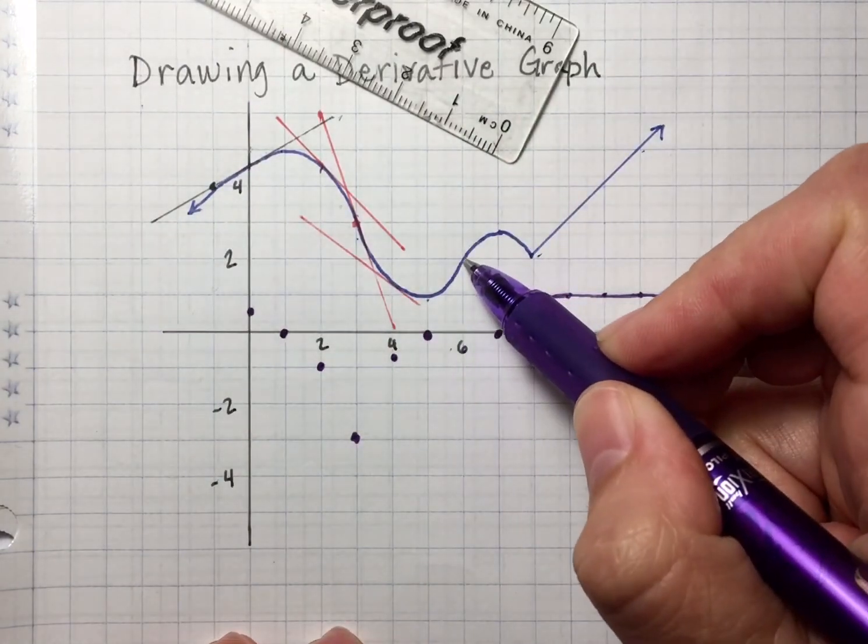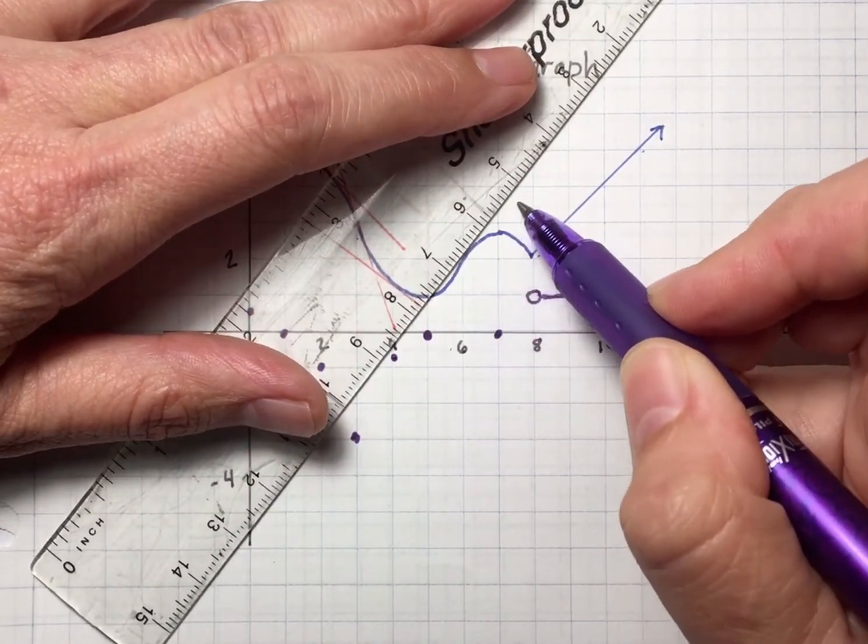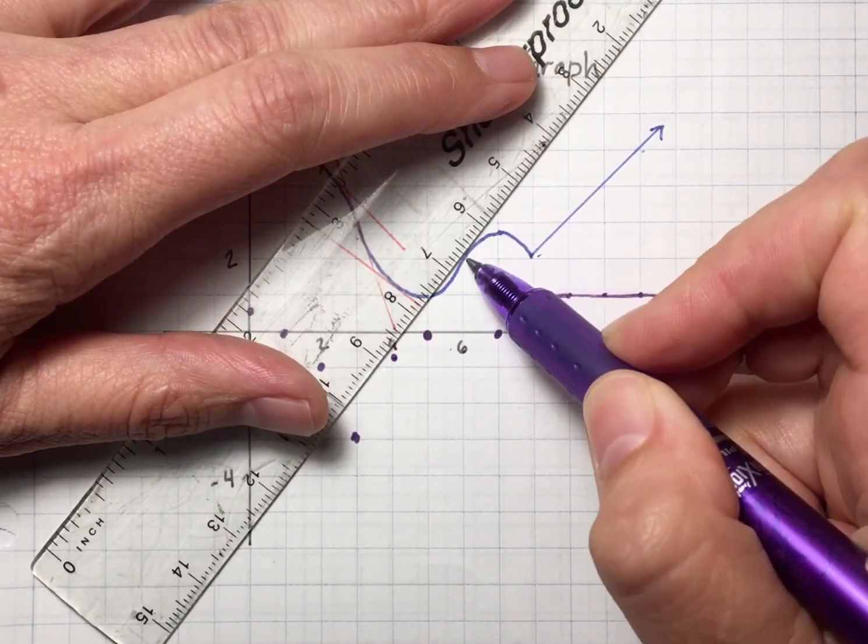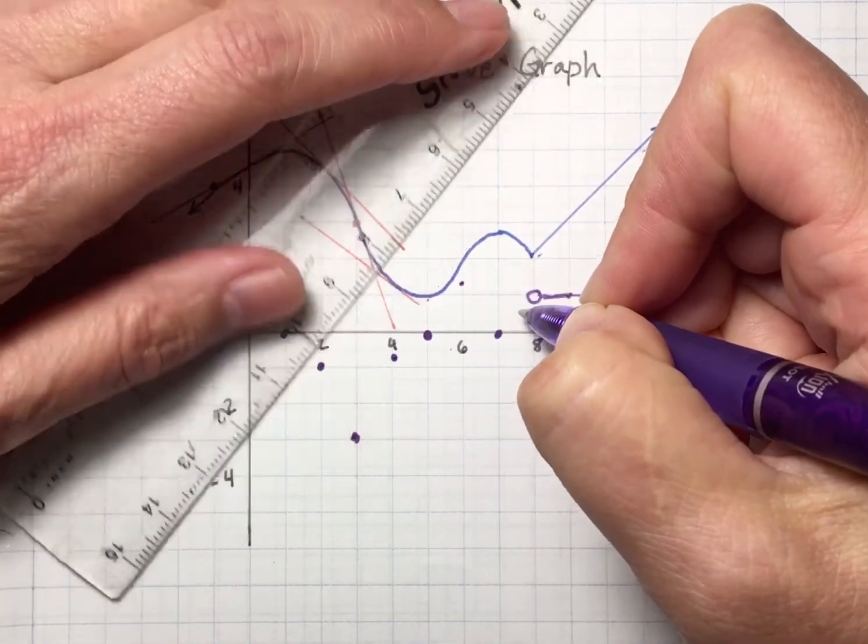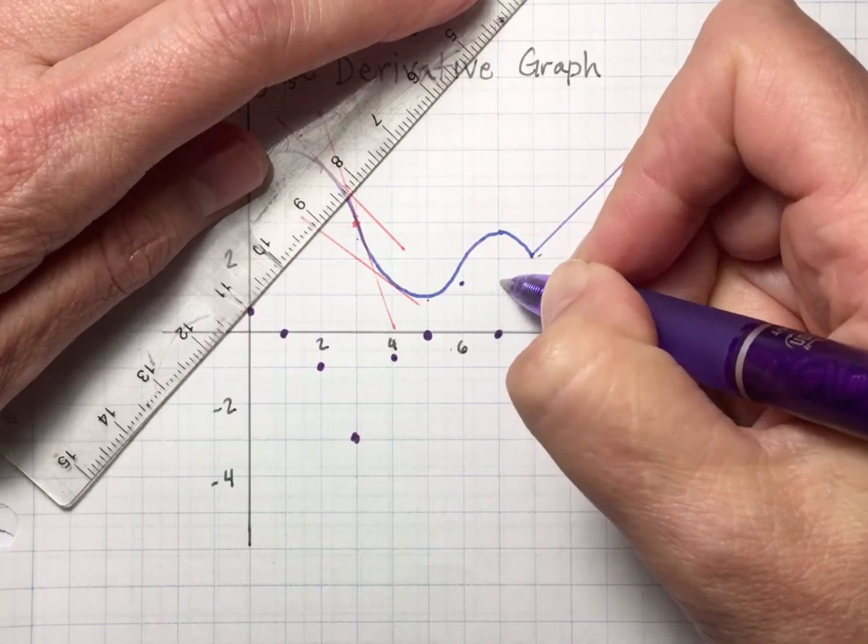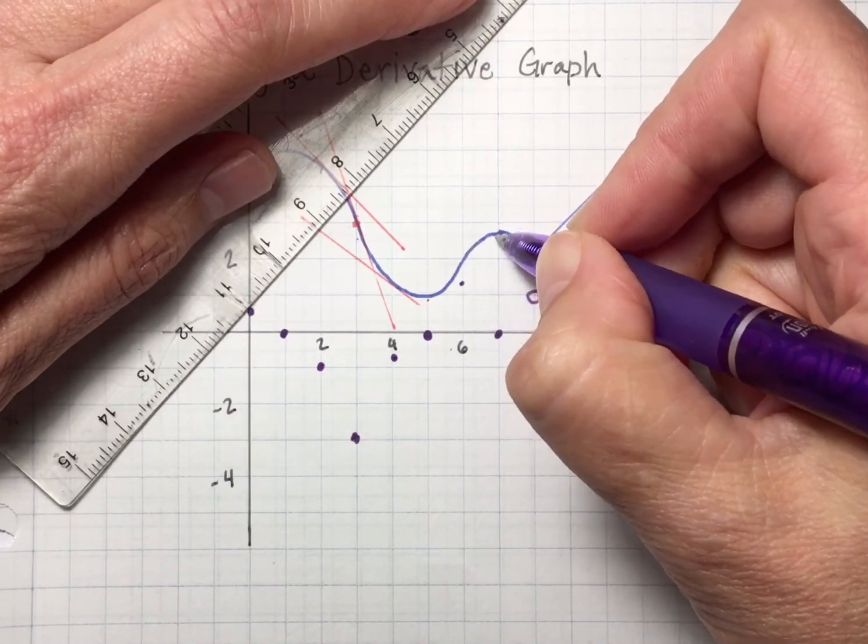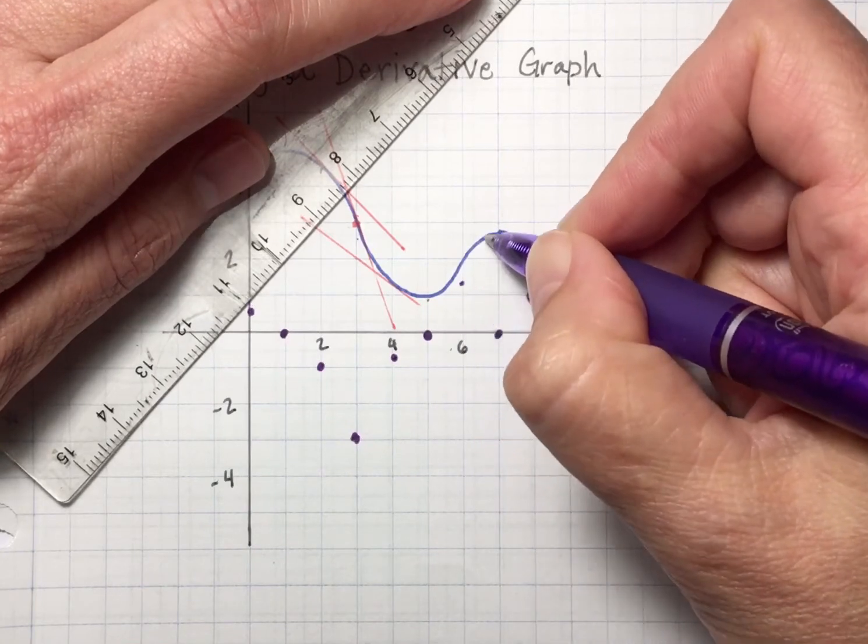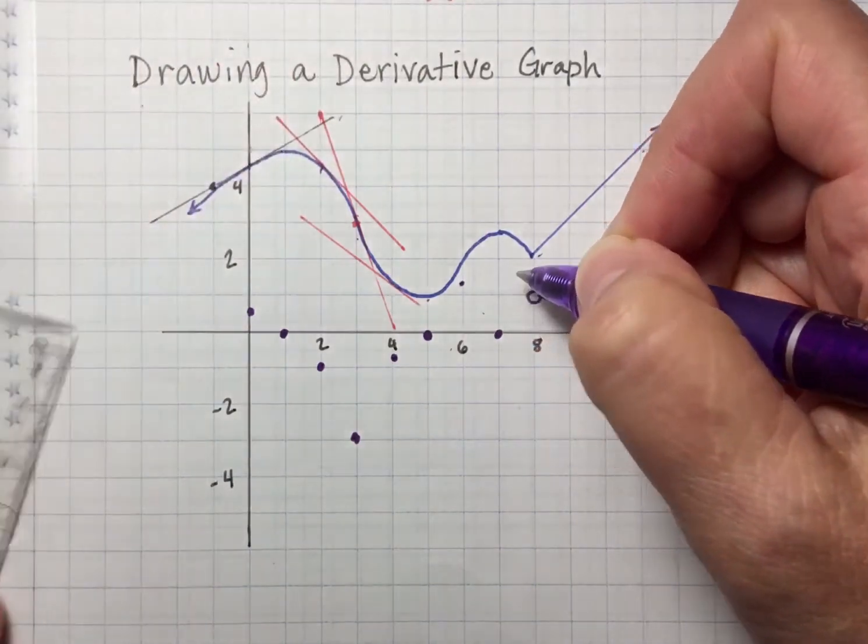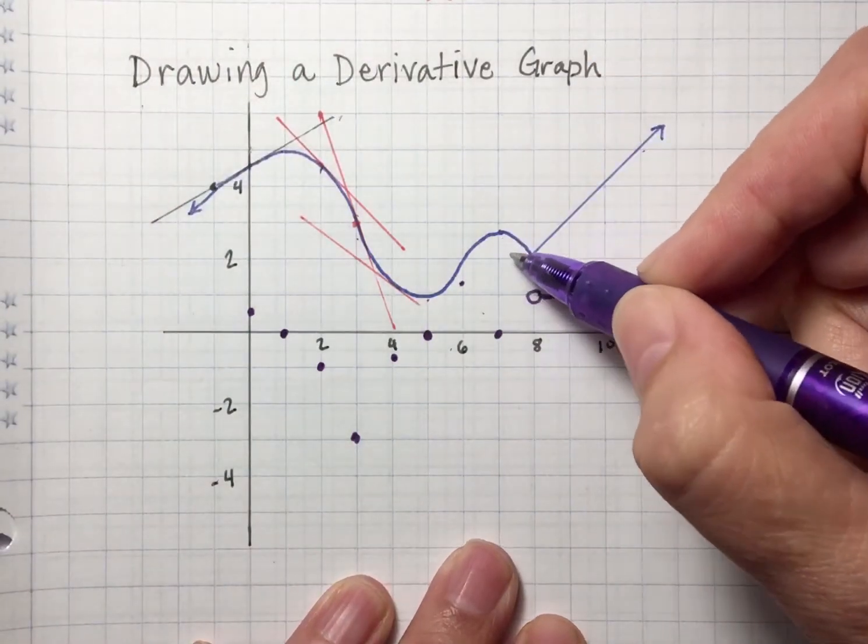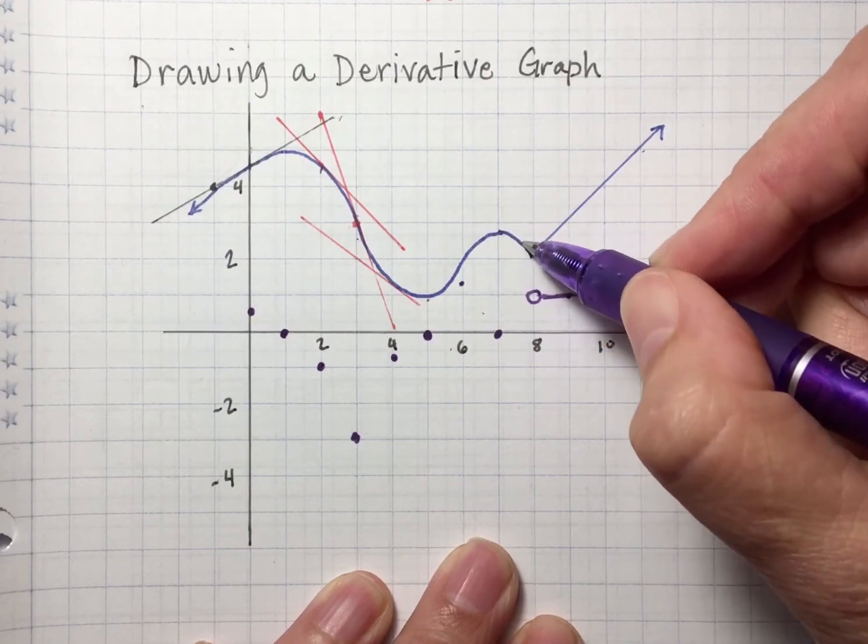Looking at x equals 6, I can just kind of put my ruler down and looking at my ruler, I'd say my slope is about one and a half. I'm just going to plot it. So from 6 to 7, it goes from steep, it gets less steep until it flattens out. So at x equals say 6.5, my slope might be around a half.